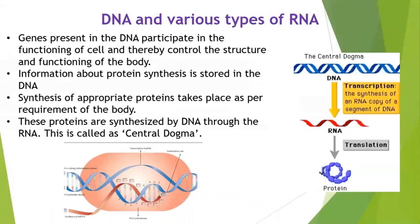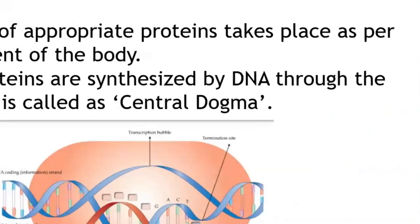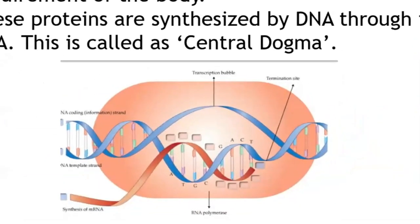As you can see in this picture — central dogma: DNA becomes RNA and RNA becomes protein. DNA is a double-stranded molecule, but only one strand is used for mRNA production. Here you can see the lower strand is used, and the red color represents the mRNA.